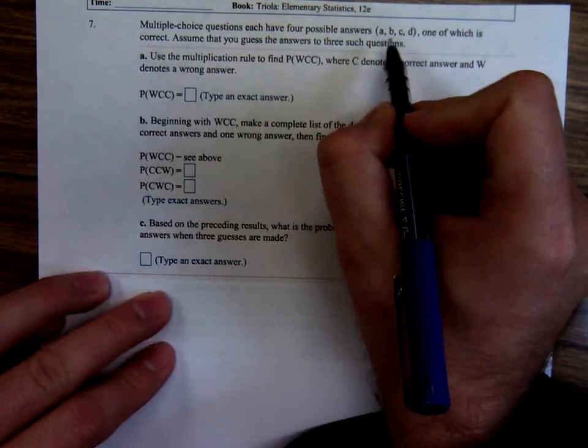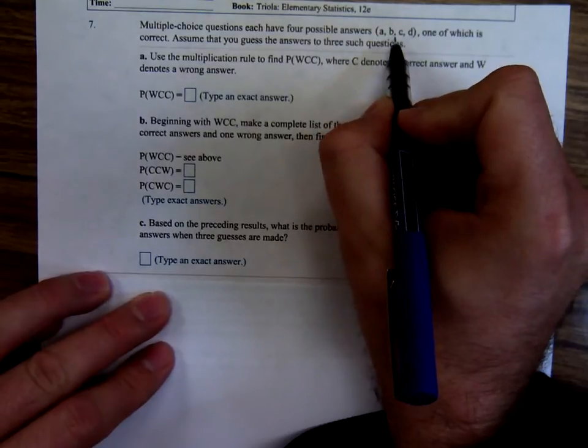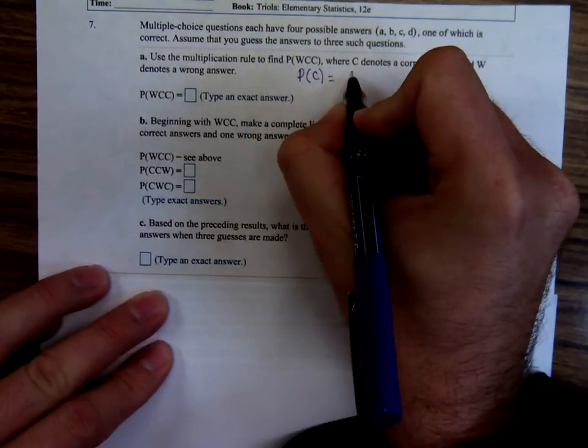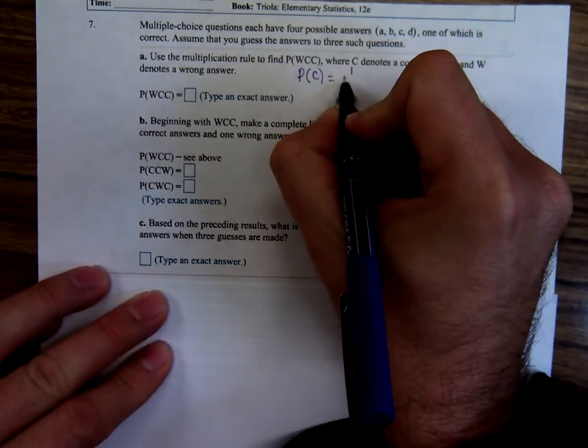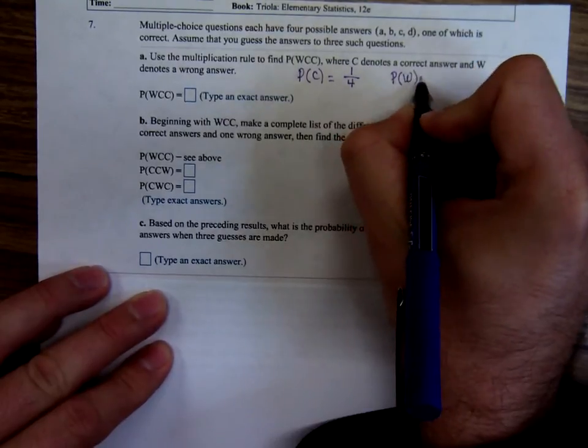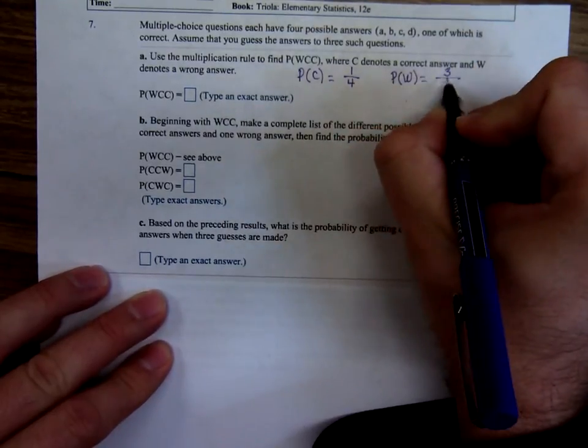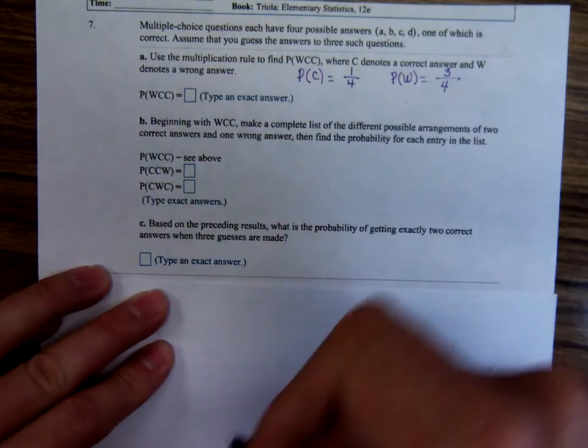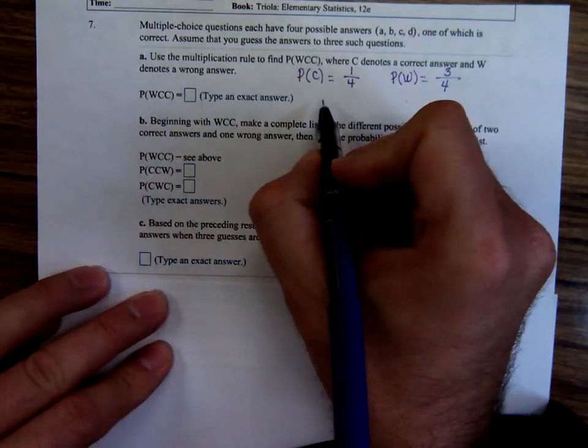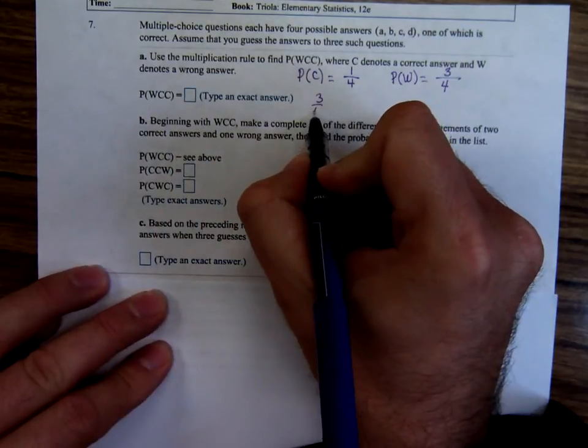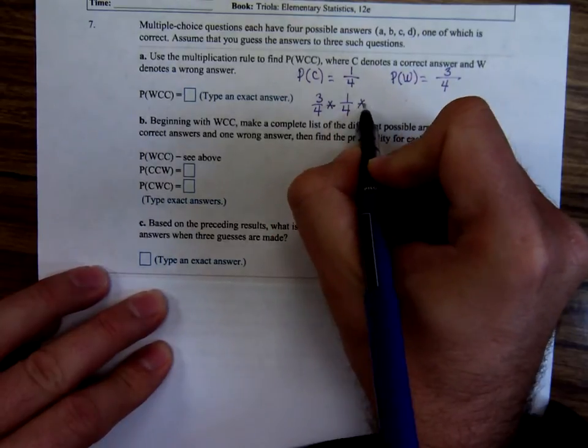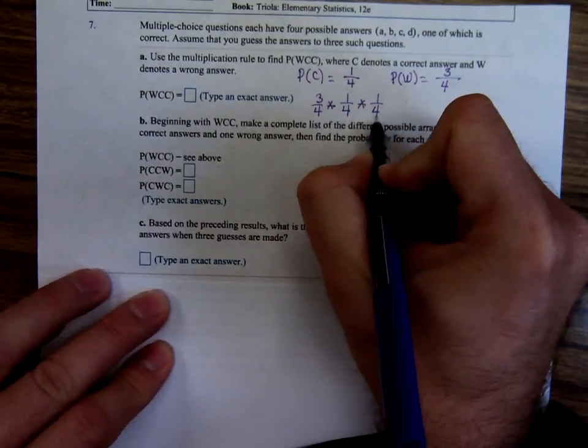Well, first of all, if A, B, C, D are your choices and there's only one right, the probability of being correct would be one out of four. The probability of guessing a wrong answer would be three out of four. So the probability of wrong, correct, correct, that would be three-fourths times one-fourth times one-fourth.